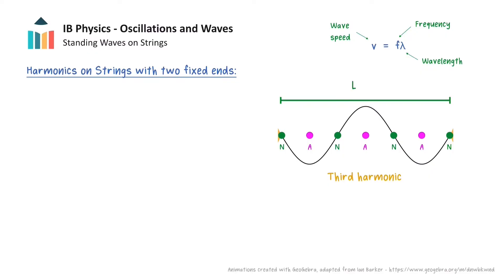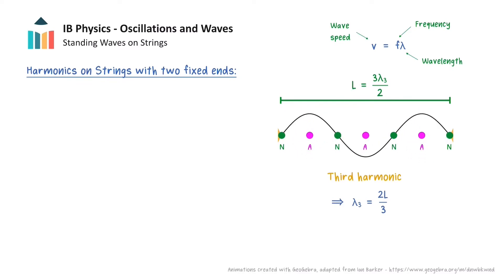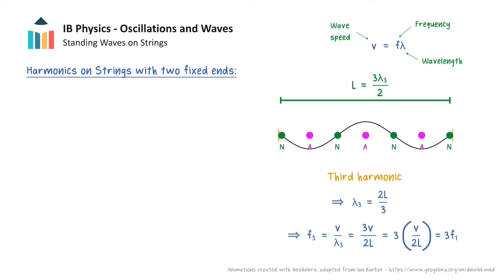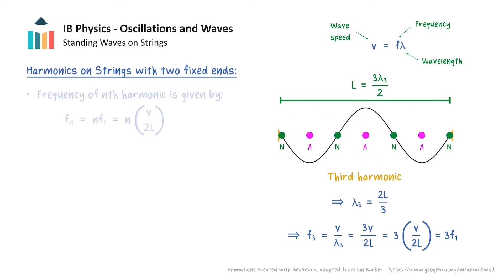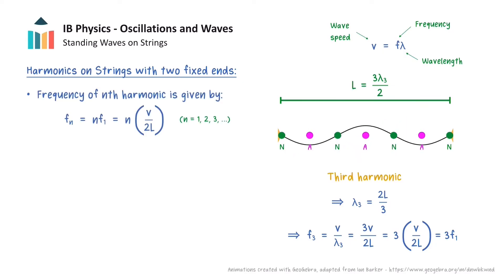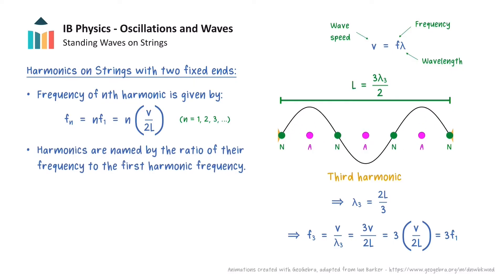We will now show the third harmonic which has four nodes and three antinodes. Here, one and a half wavelengths fit on the string, so the wavelength of the standing wave is shortened again, and by calculating the frequency we can see that this is three times the frequency of the first harmonic. We can now start to see some patterns emerging from the harmonics. All the harmonics have frequencies that are a positive integer multiplied by the frequency of the first harmonic, where n denotes the number of the harmonic. In particular, a harmonic is named by the ratio of its frequency to the frequency of the first harmonic.